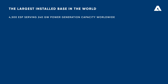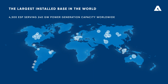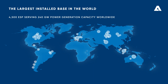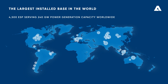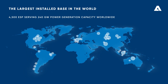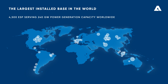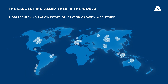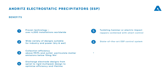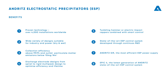Anrits' ESP technology and know-how have been established for over 70 years in more than 4,500 ESP installations around the world across all applications. This ensures Anrits can support you both with new ESPs and performance improvement of existing ESPs. Anrits has an installed base in power generation alone of 240 gigawatts globally, and more than 630 ESPs for pulp and paper processes.